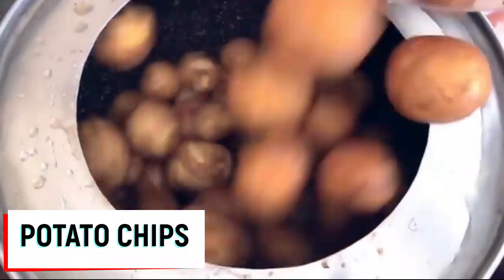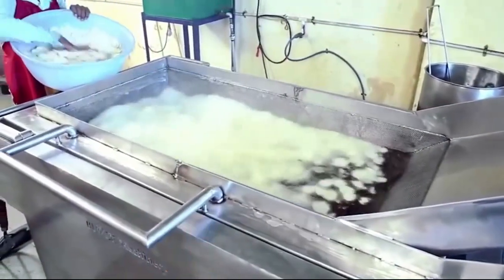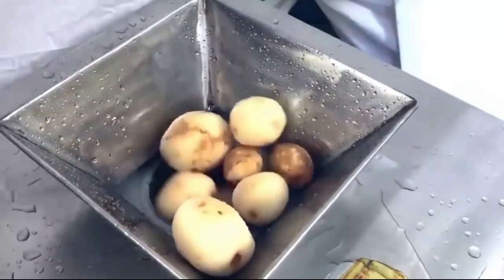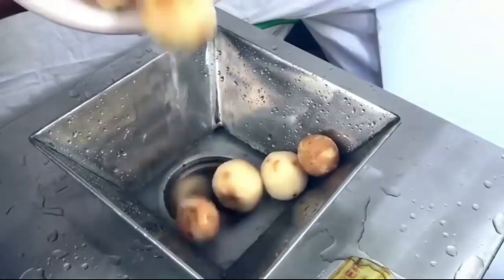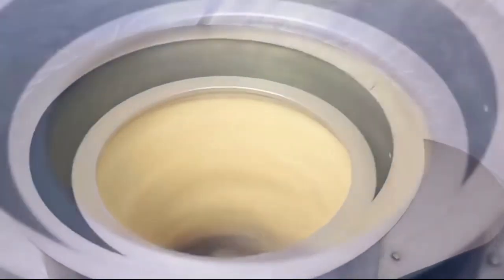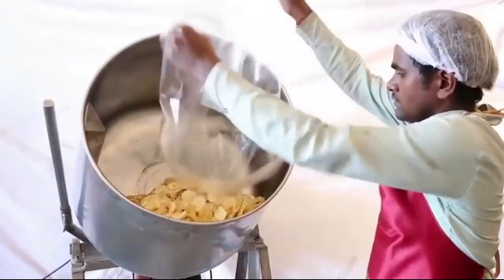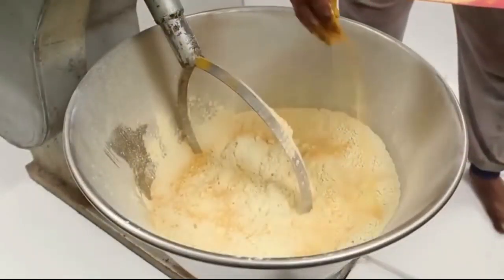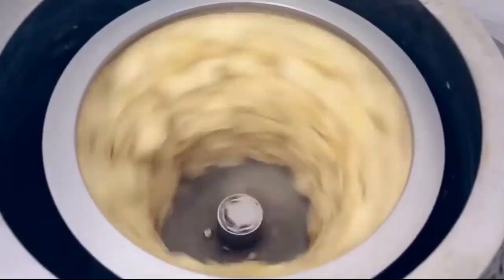Potato chips. During the first stage of production, potatoes are washed in a special drum. Once the vegetables are peeled, they're sent through a dispenser into another machine, which cuts the potatoes into thin slices. To remove the excess of moisture, they are placed in a centrifuge and then fried in oil. To give the chips a special taste, manufacturers use a mixture of spices and flavors that are evenly distributed over the potato slices.